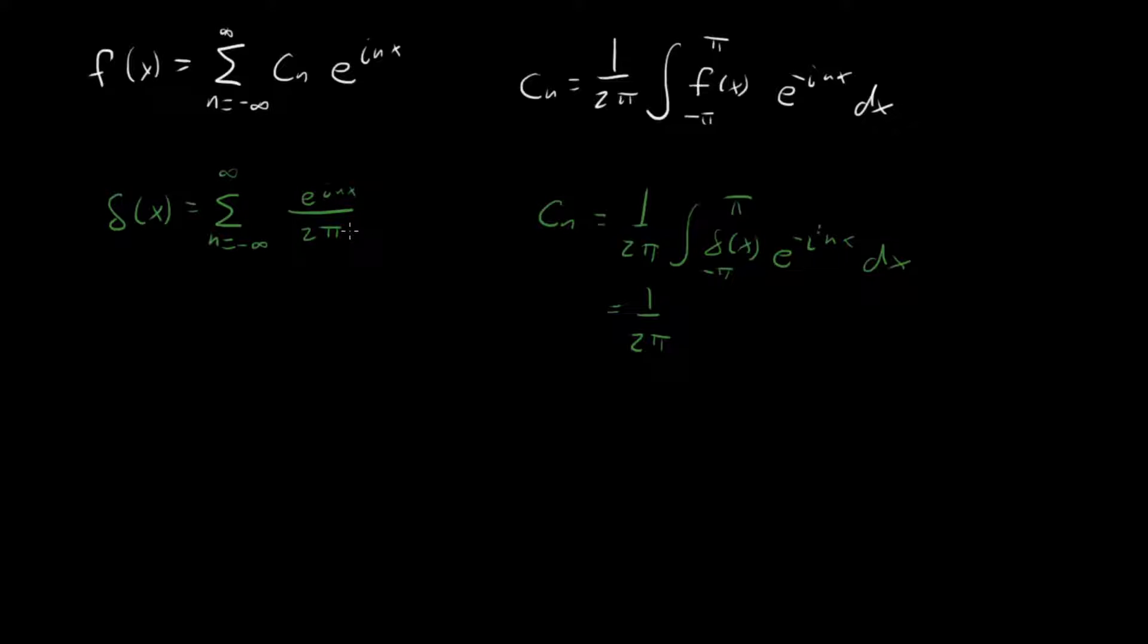And I want to stress something here, which is easy to forget, that when we're talking about the Fourier series for our function here, we're not just talking about a single delta of x. We're talking about a periodic delta of x, which is going to have some spike occurring at multiples of 2 pi.